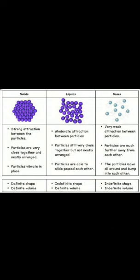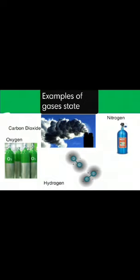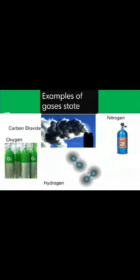Gases neither have a definite volume nor a definite shape — they have an indefinite shape and indefinite volume. There are large spaces between the particles, allowing them to move around freely. For example, carbon dioxide, oxygen, hydrogen, and nitrogen are examples of the gaseous state. Thank you and have a nice day.